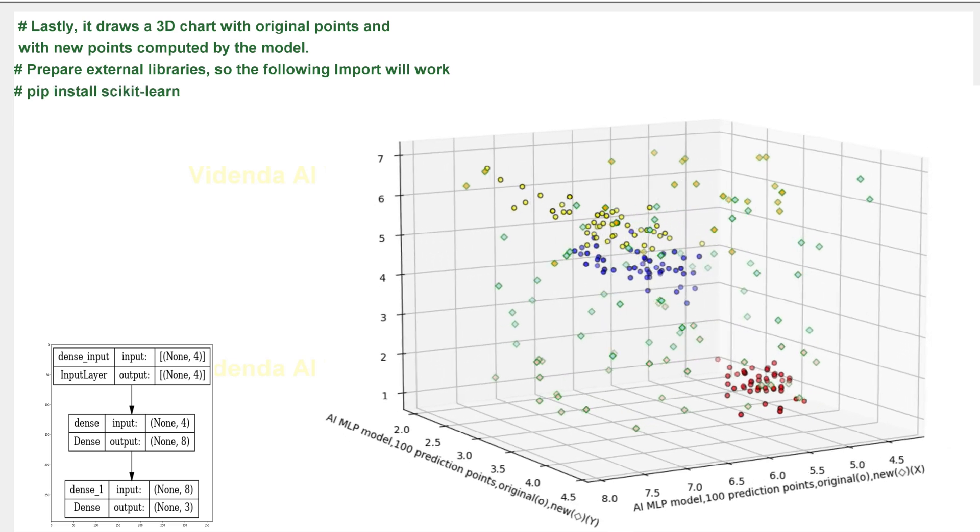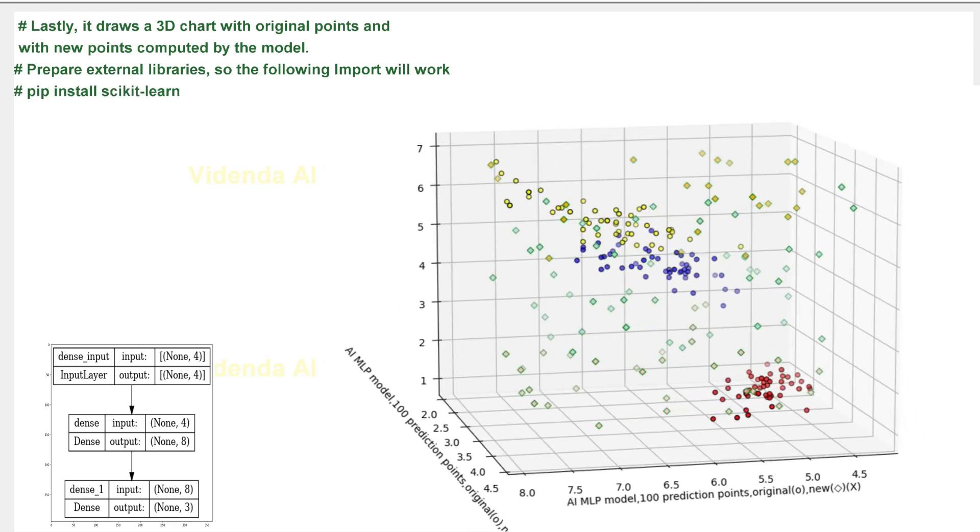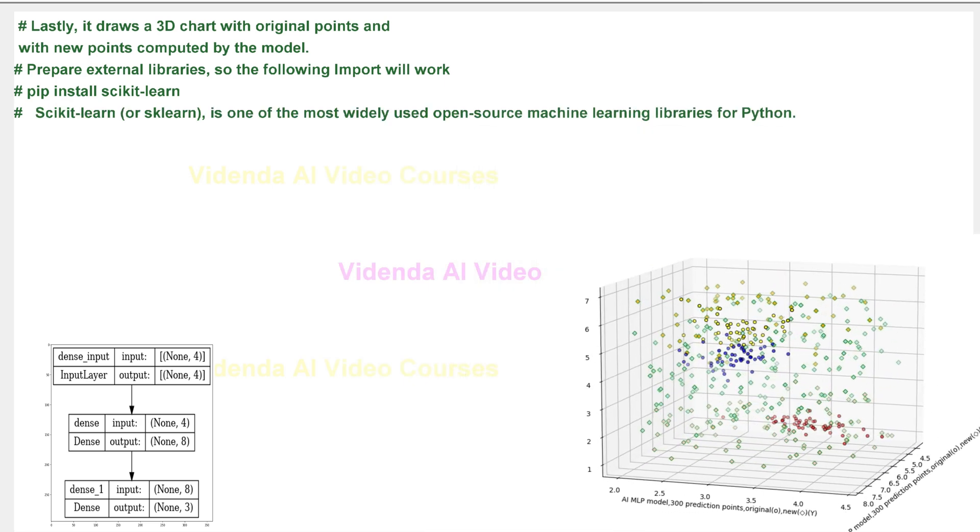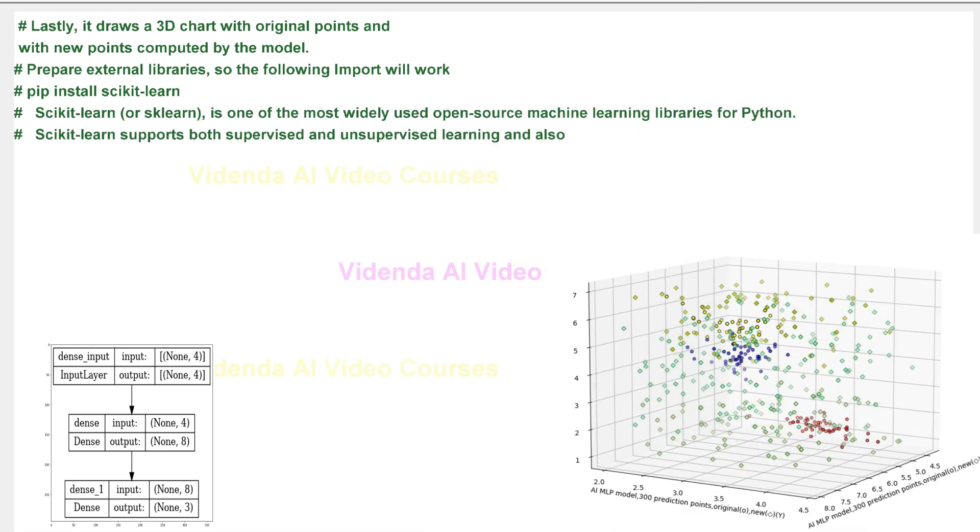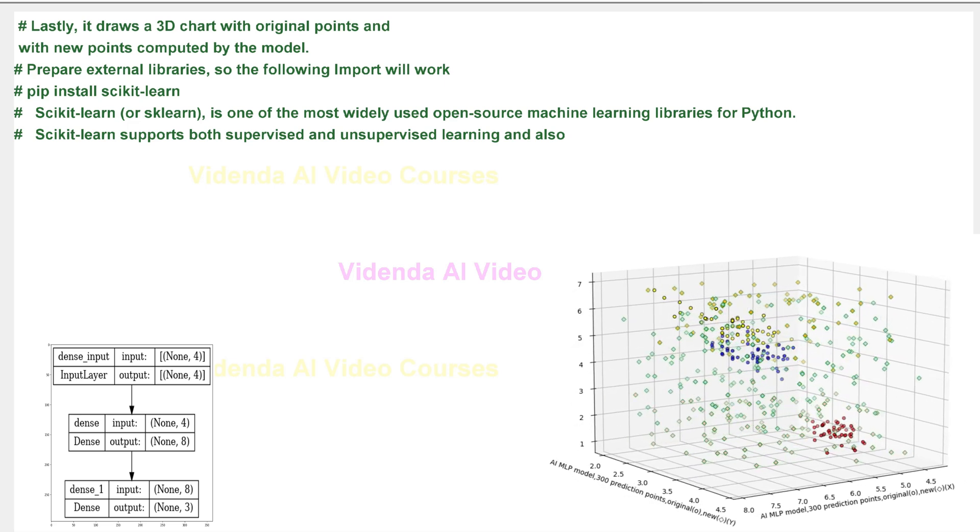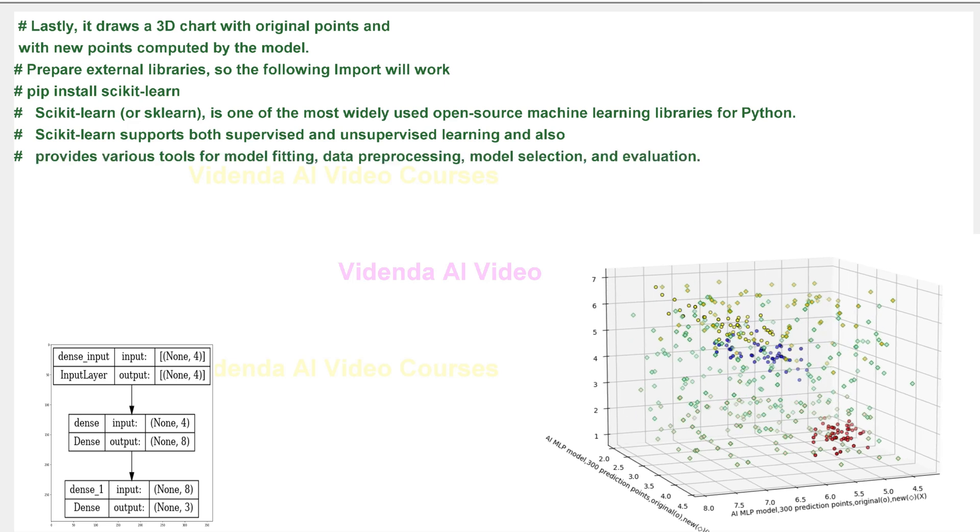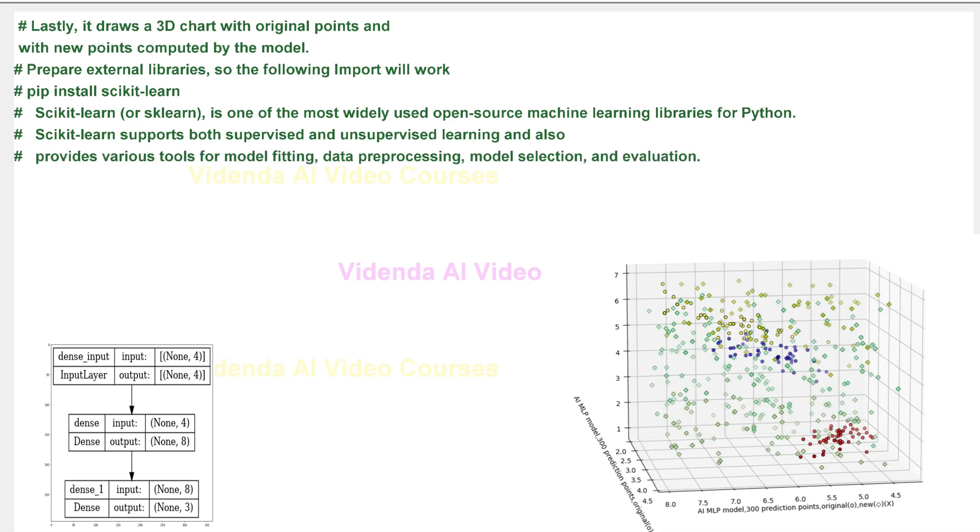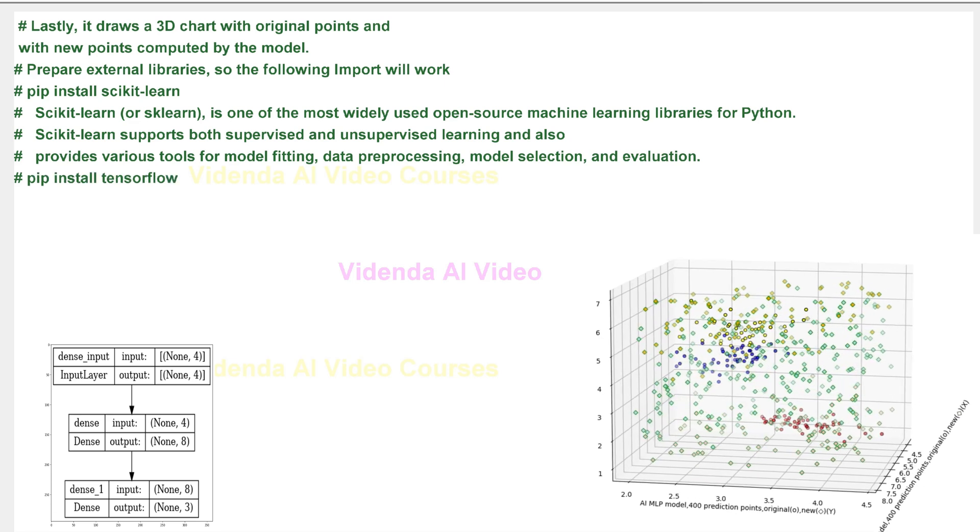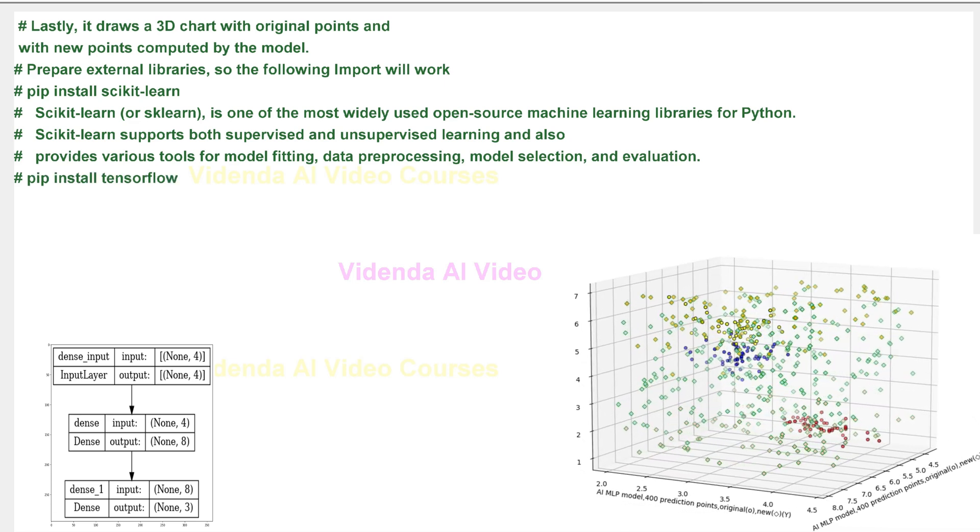Prepare external libraries, so the following import will work. PIP install scikit-learn. Scikit-learn is one of the most widely used open-source machine learning libraries for Python. Scikit-learn supports both supervised and unsupervised learning and also provides various tools for model fitting, data pre-processing, model selection, and evaluation.